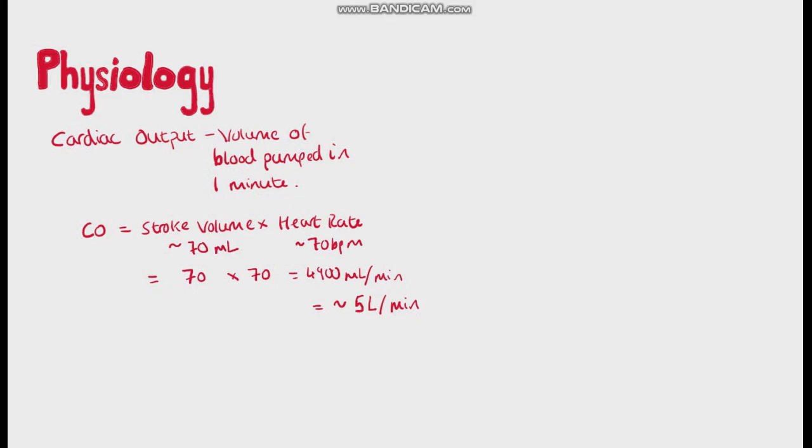Remember though, that not all the blood in the ventricle gets pumped out during systole. The volume of blood in the ventricle before it starts contracting is around 110 milliliters and this is known as the end diastolic volume. Typically, only 70 milliliters gets pumped out and that's the stroke volume.